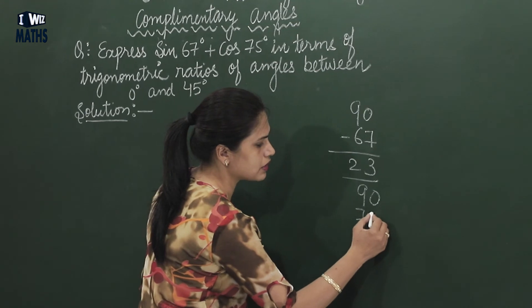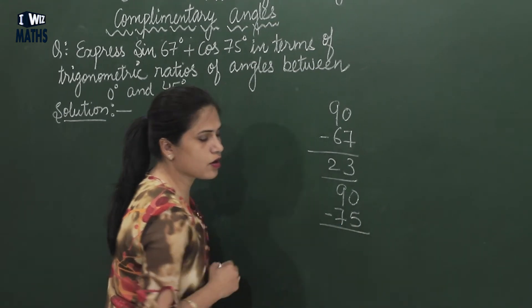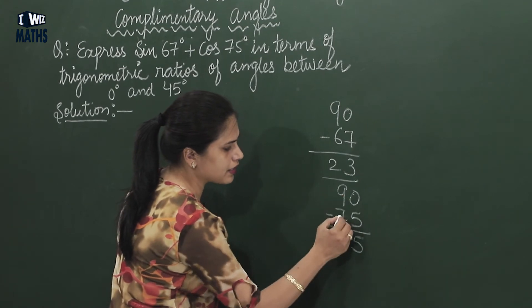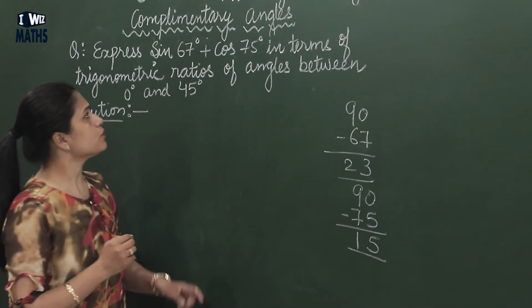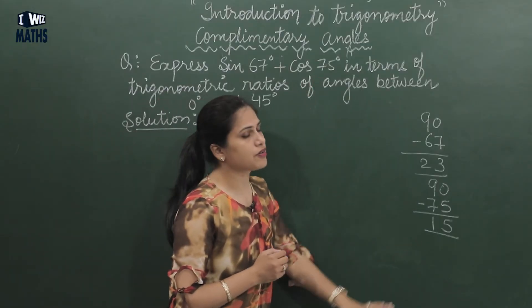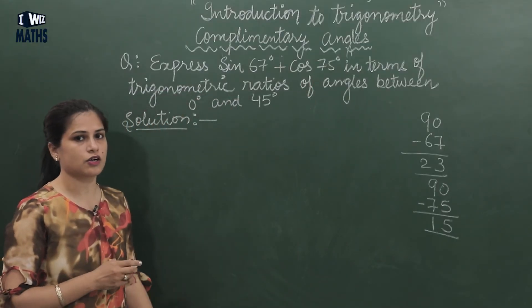For that we again need to subtract it from 90. Meaning how much? 10 minus 5 is 5, 8 minus 7 is 1, so 15. Meaning 67 can convert to 23, 75 can convert to 15. Meaning it can come in the range.